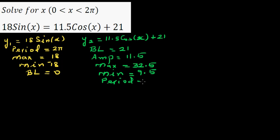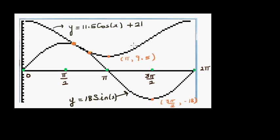I've already used a graphic calculator to draw these. This is y1, the sine graph, and this is y2, the cosine graph — 11.5 cos x plus 21. The question is: what are the points of intersection? From the graph you can see the answer is between 0 and pi, which is 3.14. Understanding this graphically helps you understand the algebra behind it.